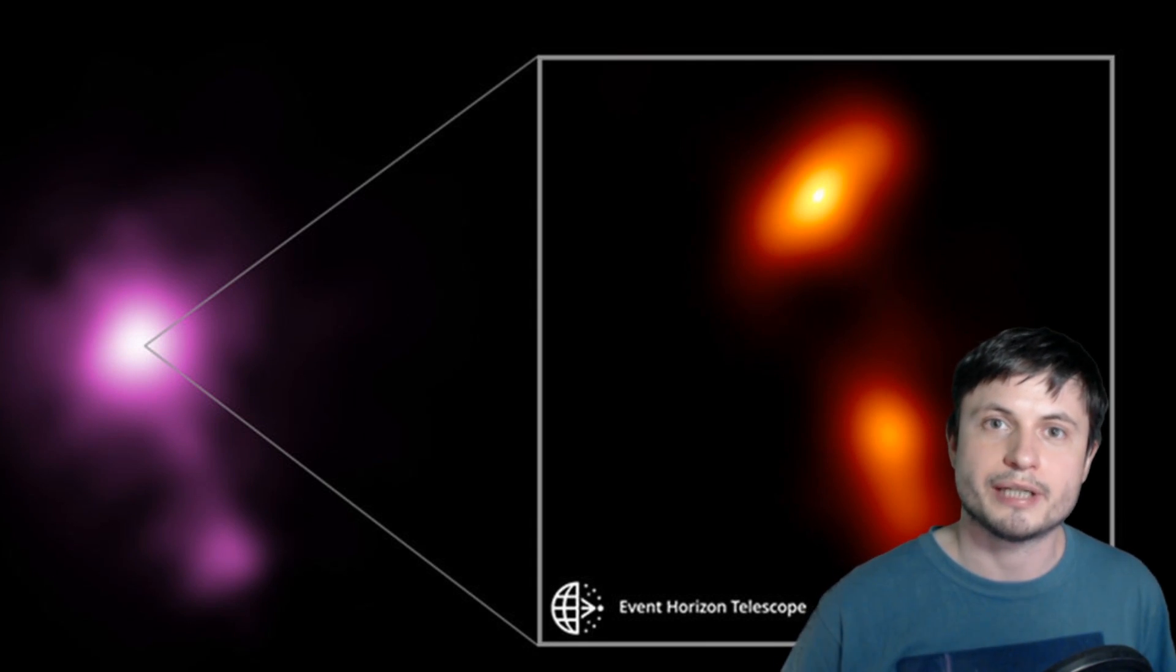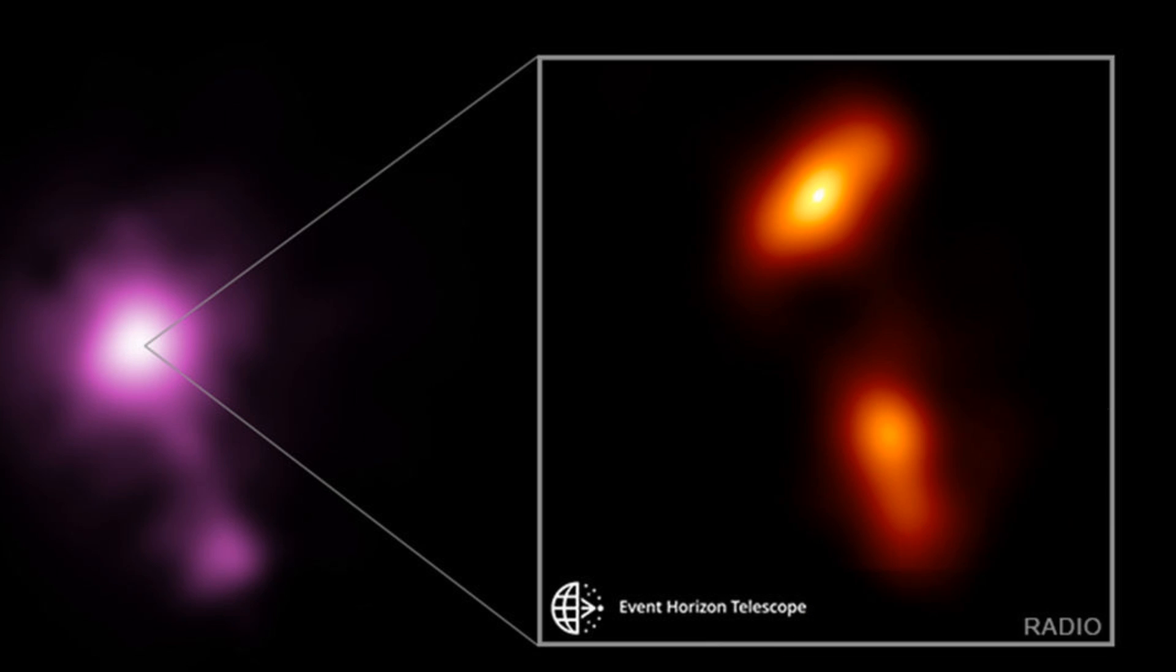...they were first actually using this other very well known galaxy to try to essentially establish certain parameters. They basically used it as a kind of a calibrator for what was about to happen with the M87 black hole.